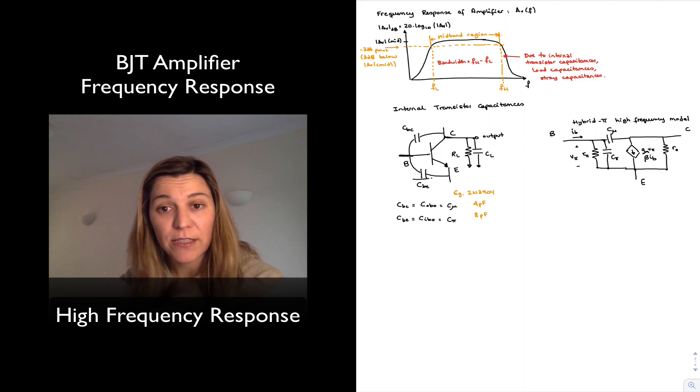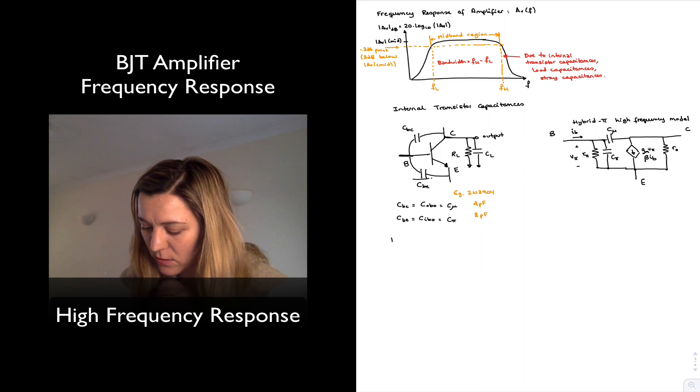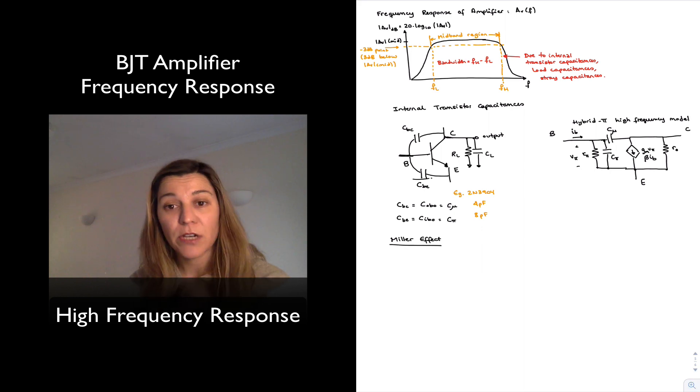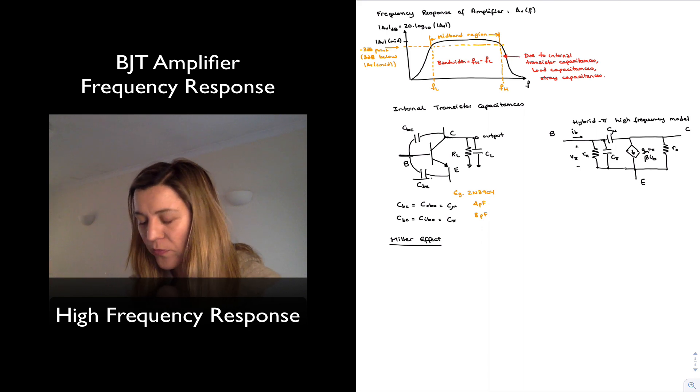And so you have this CBC capacitance, which is basically connected in a feedback path from input to output, or between input and output. And so we're going to see what happens when we encounter capacitors connected like that between input and output. And what happens is what's known as the Miller effect.